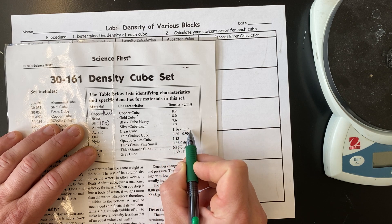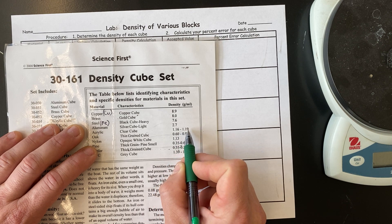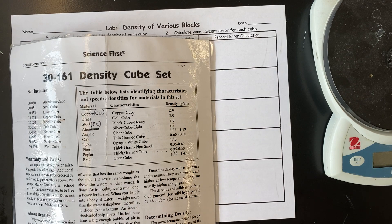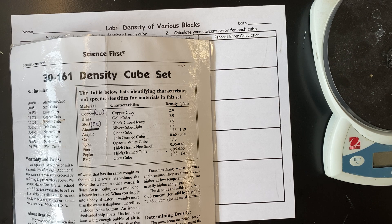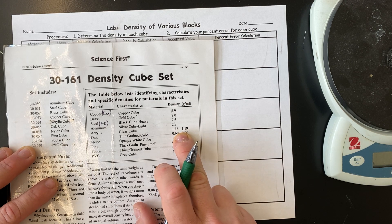So, 1.16 and 1.19, if I take the middle of that, what do I get? 1.175, right? So, I would get 1.175. So, then I would use that as my middle number, and that would be my accepted value.